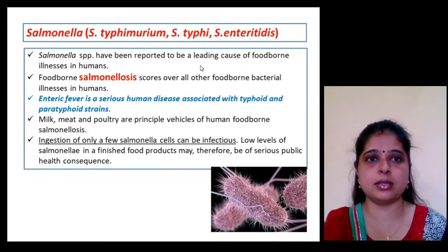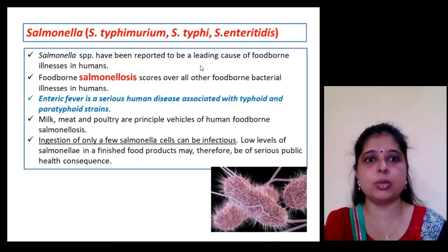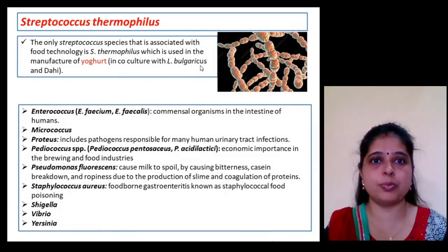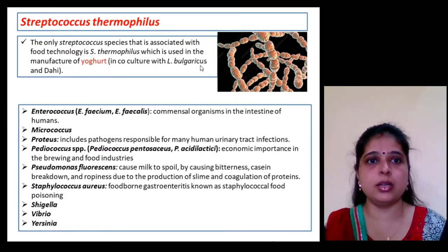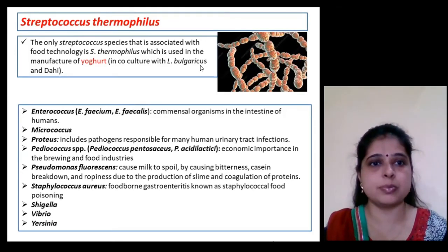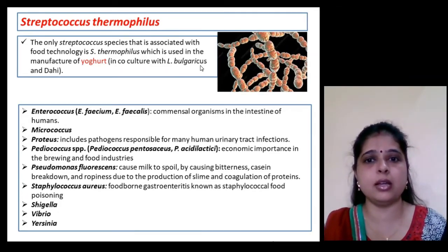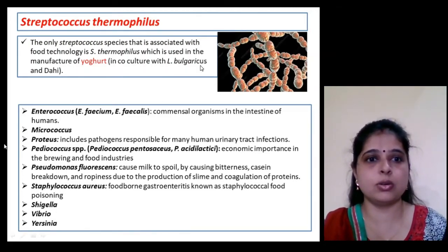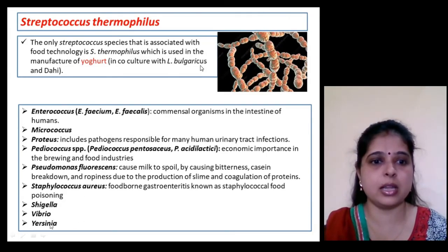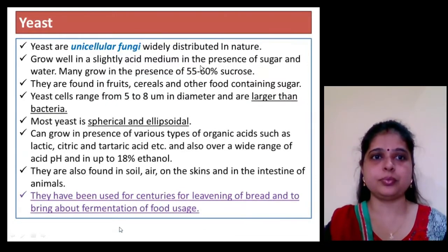Salmonella causes a dangerous disease in humans — even a single or a few cells ingested can cause enteric fever. Milk, meat, and poultry are the principal vehicles of human salmonellosis. Streptococcus thermophilus is associated with food technology and is used in the manufacture of yogurt in co-culture with Lactobacillus bulgaricus. Other bacteria of note include Enterococcus, Micrococcus, Proteus, Pediococcus, Pseudomonas, Staphylococcus, Shigella, Vibrio, and Yersinia.